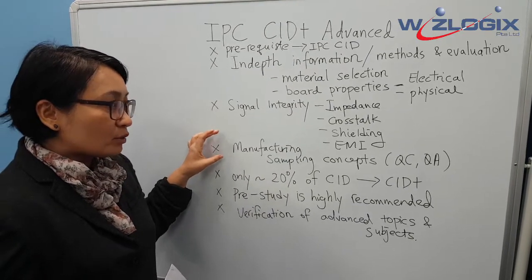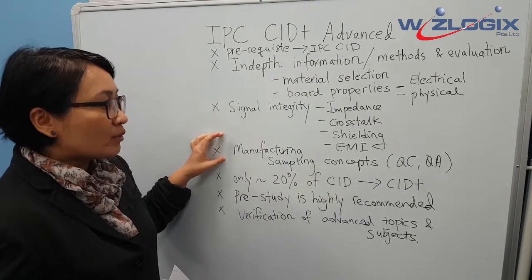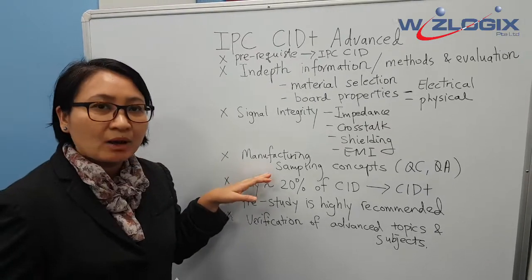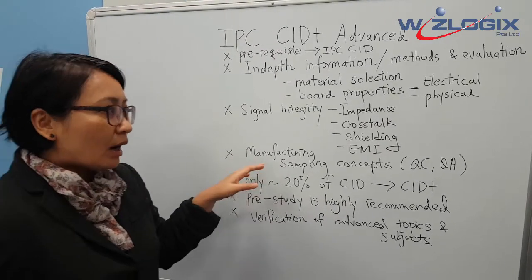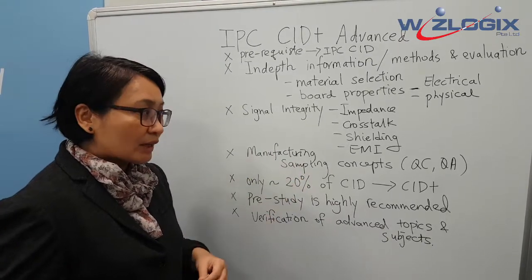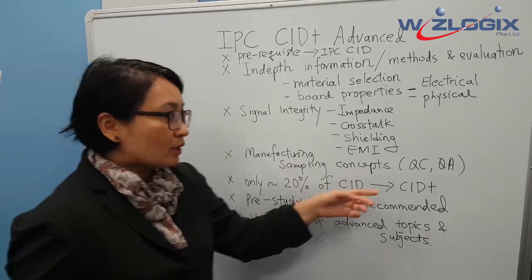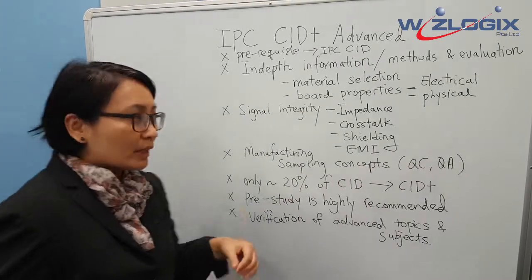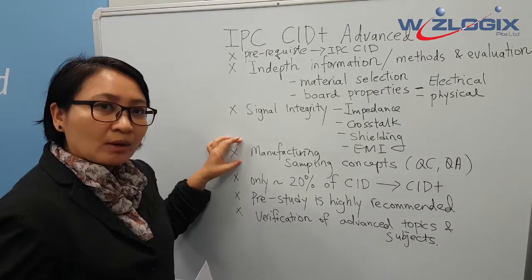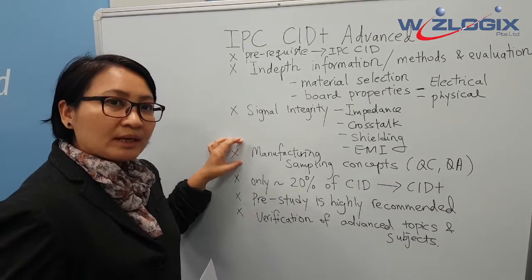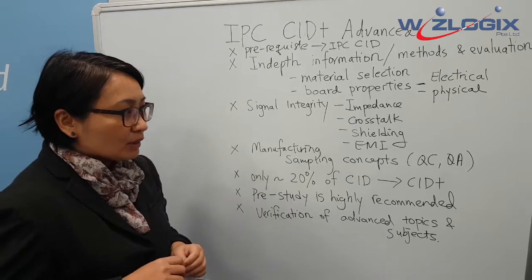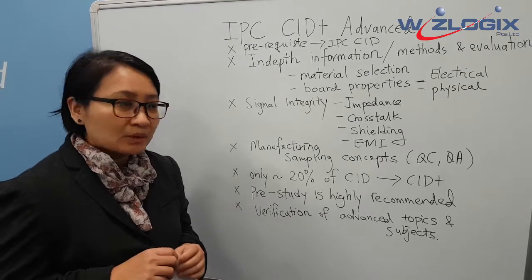We also cover important information about manufacturing, including sampling concepts — how sampling is conducted — and quality lifecycle in terms of QC and QA. These are additional topics on top of what you have already covered in the basic CID.